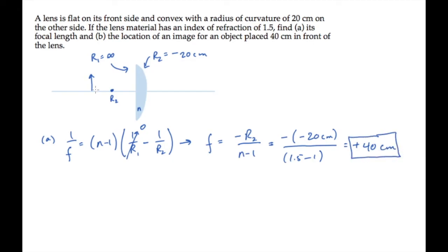Part B asks for the image location for an object placed 40 centimeters from the lens. That places the object at the focal point f.